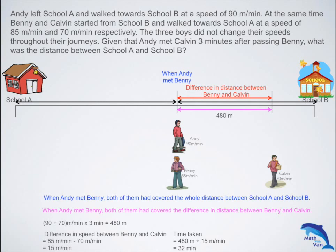So we know that 32 minutes later, when Andy met Benny, they had covered their total distance. This total distance — we take the distances covered by Andy and Benny and add them together — that gives us the distance between school A and school B. The combined speed of both Andy and Benny multiplied by 32 minutes gives you 5,600 meters.